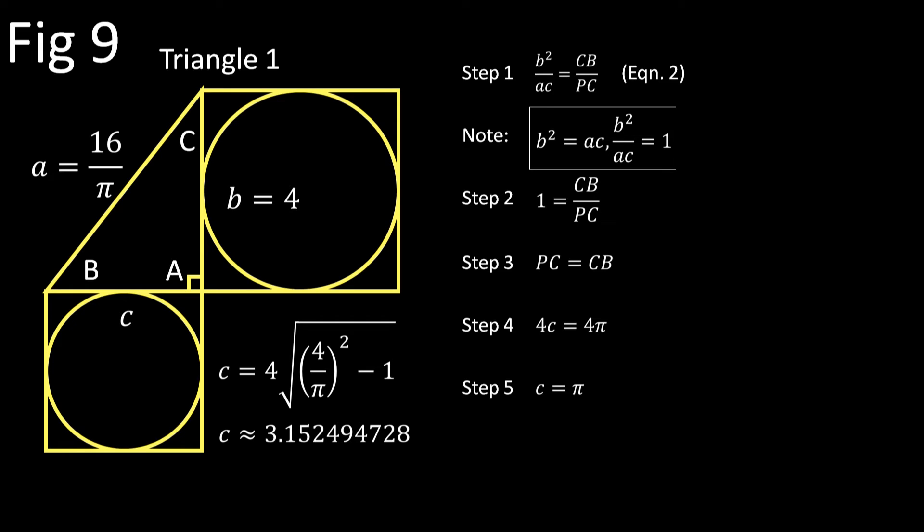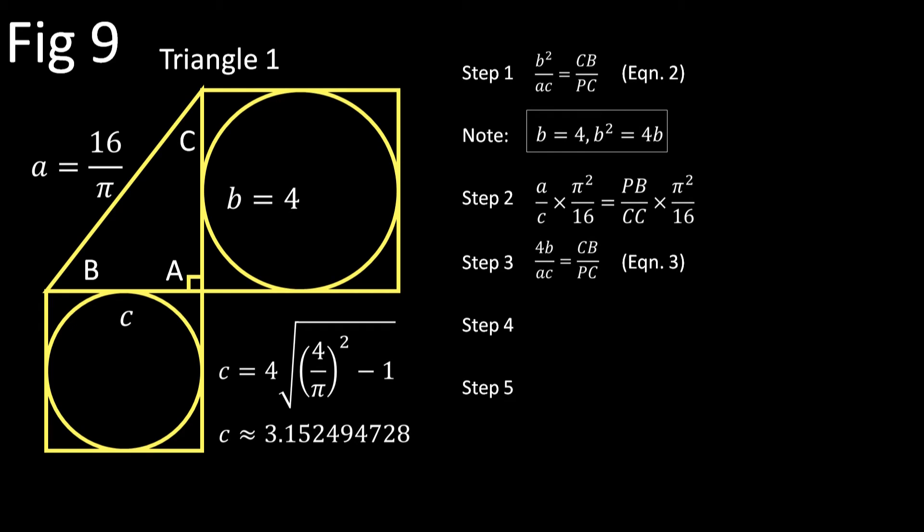This would be true if Triangle 1 was a Kepler triangle, which Wolham never proves beforehand. Wolham takes another circuitous route around Triangle 1 to get his Equation 3. In the process he makes a second inappropriate substitution, replacing b² with 4 × b in Step 2. Oh, the humanity!